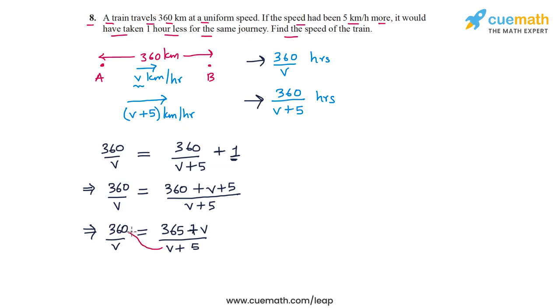Now let's cross multiply and try to write this in a simpler form. So we multiply 360 by v plus 5, so this is 360v plus 360 into 5 is 1800. And on the right hand side we will get v times 365 plus v, so that's 365v plus v times v, or v squared. So this seems to be a quadratic equation in v.